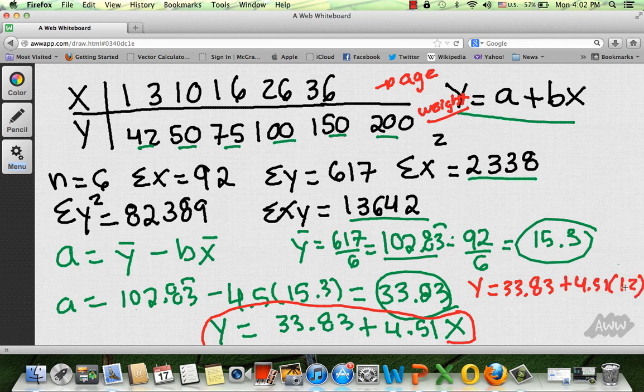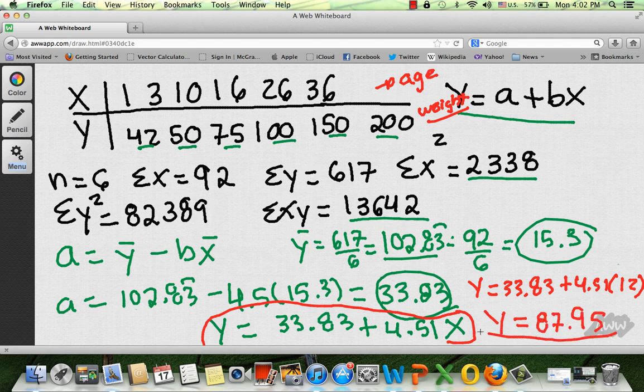And look at this, I plug the 12 there. And let me go ahead and do it in the calculator because I didn't have it done. 4.51 times 12. And your answer should be 87.95. And that's it, 87.95. So, when the cow is 12 years old, it's going to weigh 87.95. You can see how helpful building these equations are because you can predict values for the values of x.